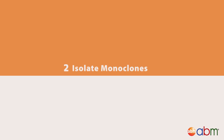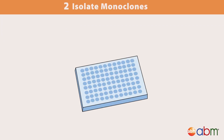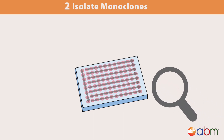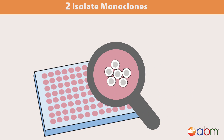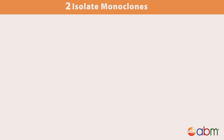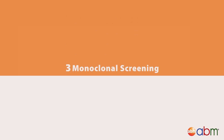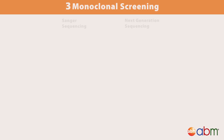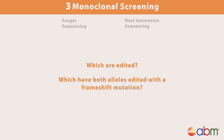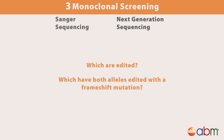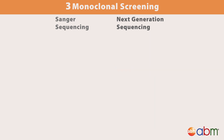You've screened your polyclonal pool and now know that it has undergone some editing. The next step is to perform serial dilution to isolate single cells from your pool. These cells can be expanded to create monoclonal cell lines. The next round of screening is done to find a cell line that has a biallelic or homozygous mutation creating a frameshift mutation. We recommend performing monoclonal validation using either Sanger sequencing or next-generation sequencing, as these will give you the most information about your monoclonal cell lines.